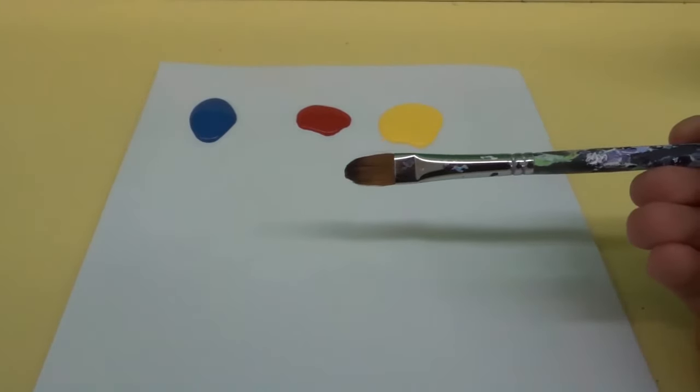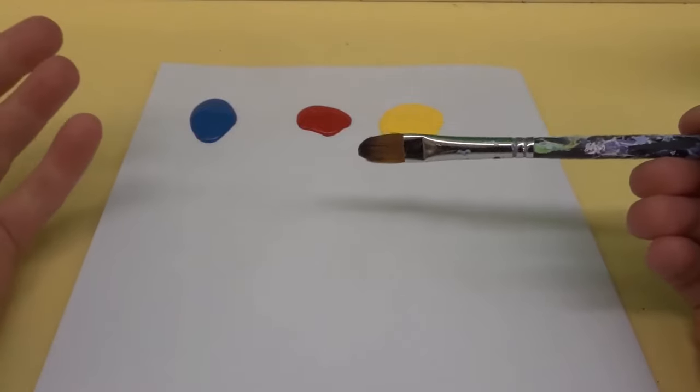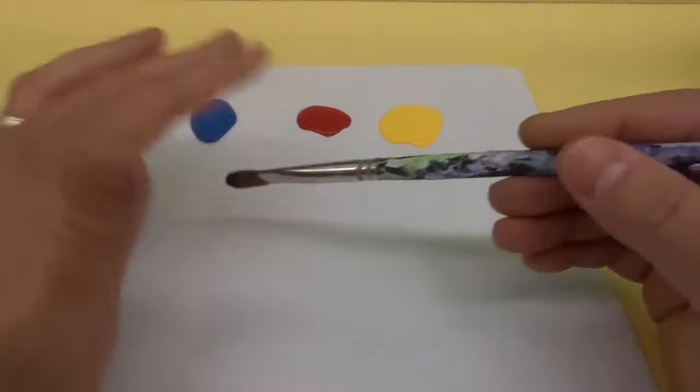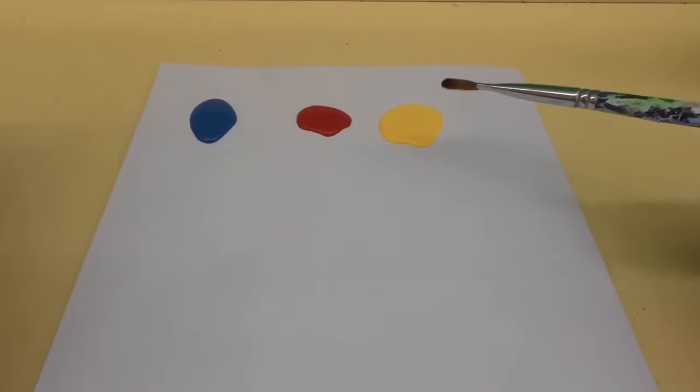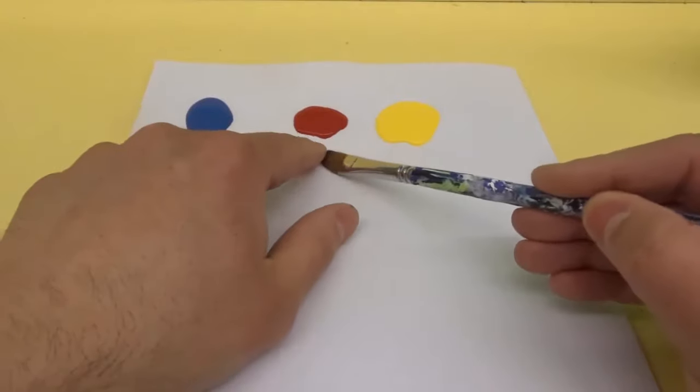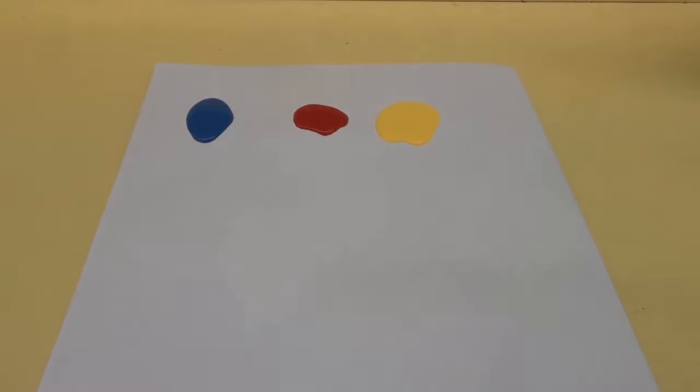Hey everybody, I'm here today to show you how to make gold color by mixing paint. This will be a full tutorial. As you can see right here, we have blue, red, and yellow. These three colors, when we mix them properly, will make gold.